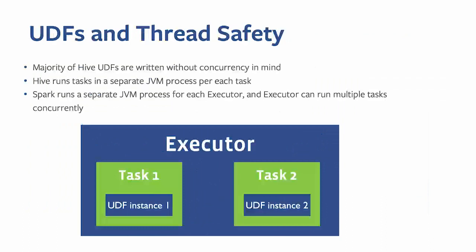Another big challenge was UDF thread safety. The majority of UDFs, when written by our Hive users, didn't take concurrency into account. In Hive, tasks run in a separate JVM process per task. In Spark, executors can run multiple tasks concurrently on the same JVM. This means two tasks each have their own UDF instance, but if a UDF has shared static state, concurrent initialization can cause data corruption — one instance can override data that another instance relies on.